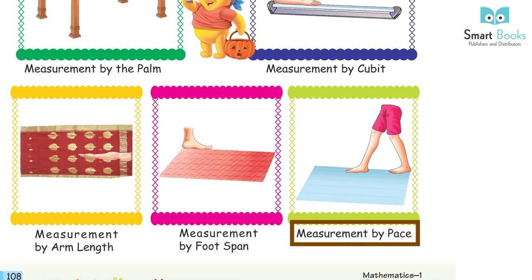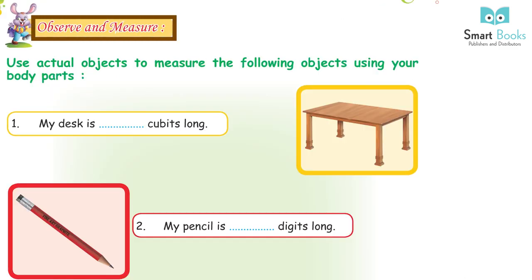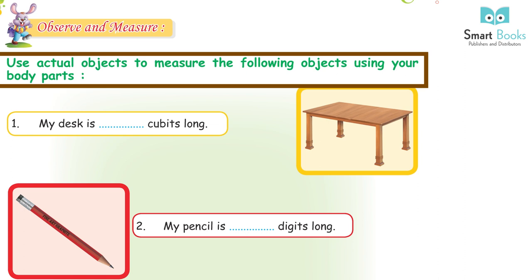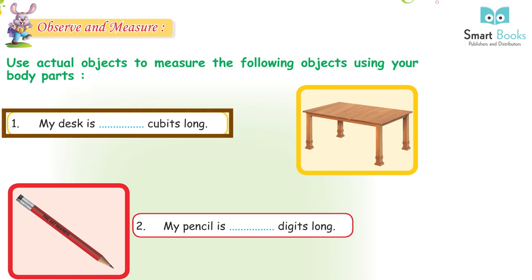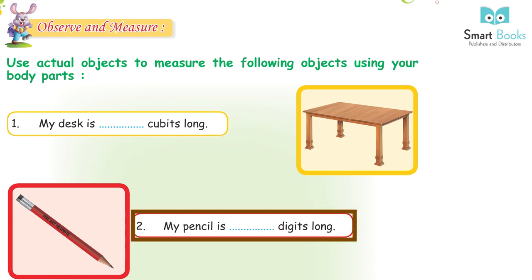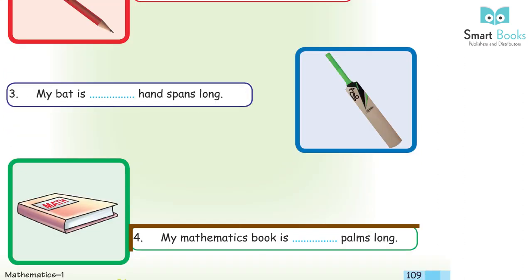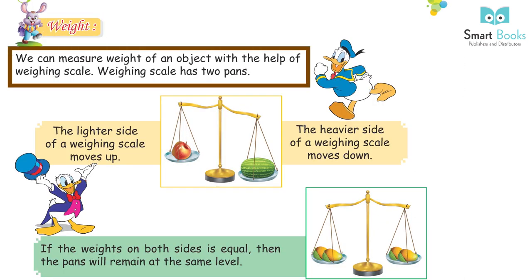Body parts used for measurement: Finger, Digit, Hand span, Palm, Cubit, Arm length, Foot span, and Pace. Observe and measure using actual objects with your body parts: My desk is dash cubits long. My pencil is dash digits long. My bat is dash hand spans long. My mathematics book is dash palms long.